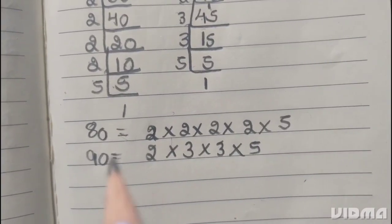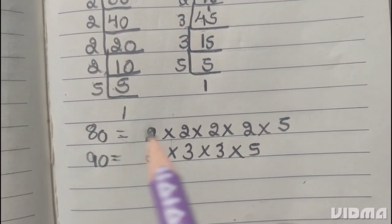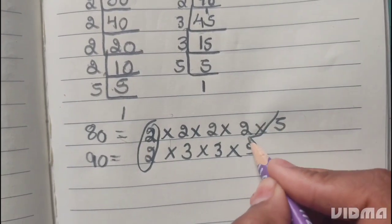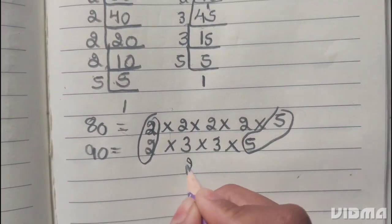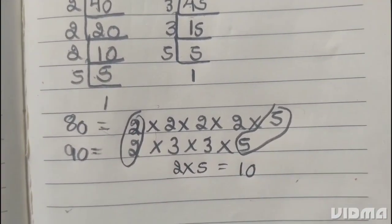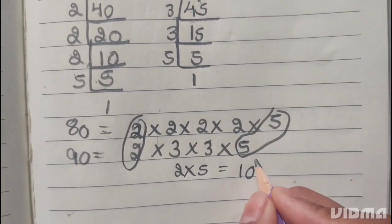HCF of 80 and 90 is 2 times 5. Now we have to multiply. 2 multiply 5 equals 10. Then the required number is 10.